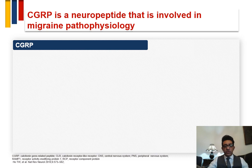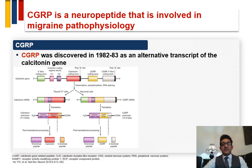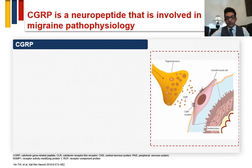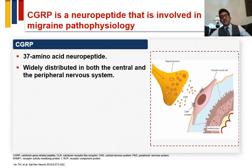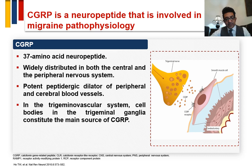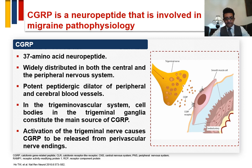CGRP was discovered in 1982 as the alternative transcript of the calcitonin gene. It is composed of 37 amino acid neuropeptides, widely distributed in the central and peripheral nervous system. It is a potent vasodilator involved in the trigeminovascular system, with cell bodies in the trigeminal ganglia and the thalamus.